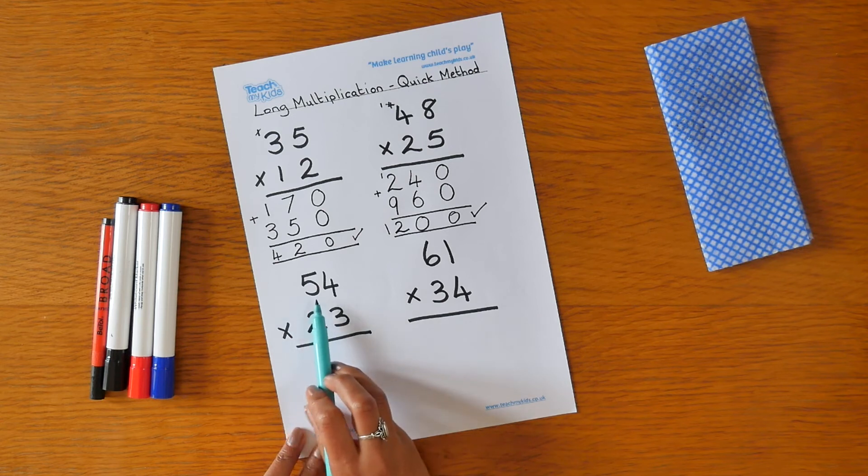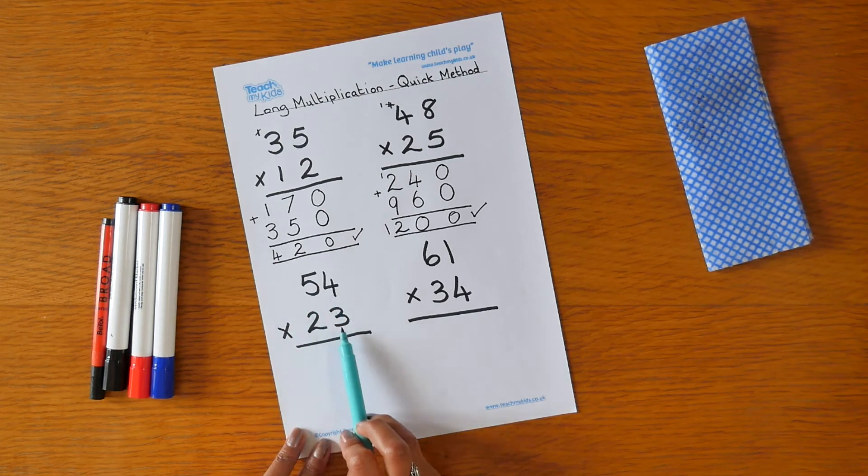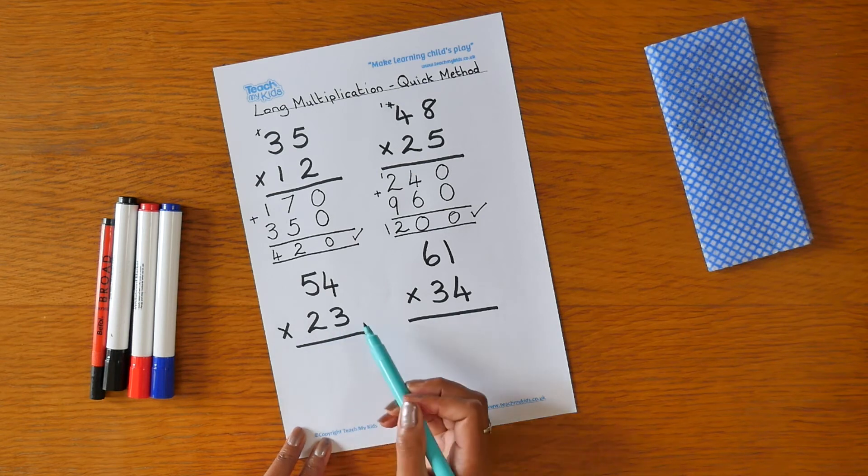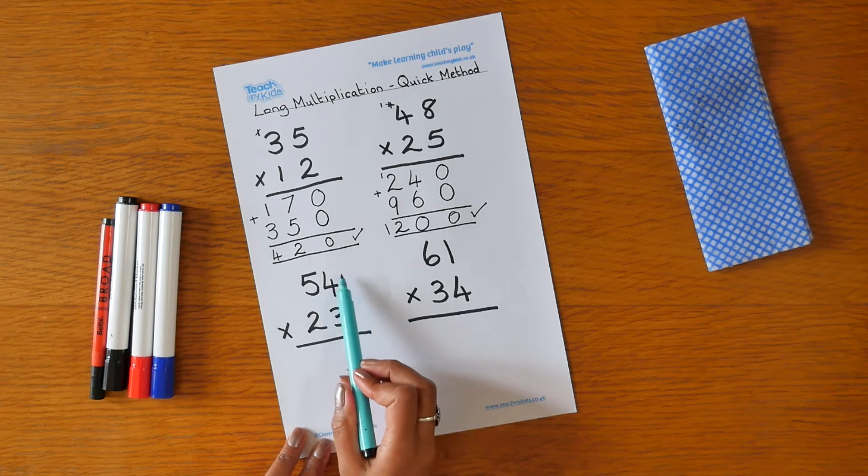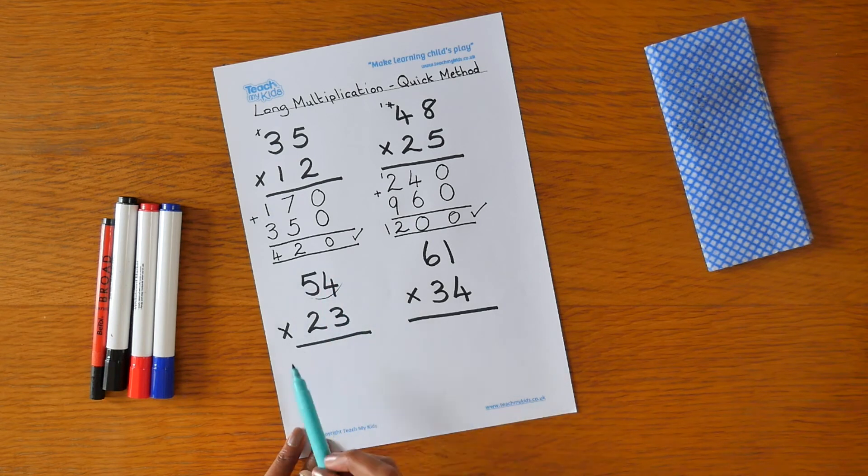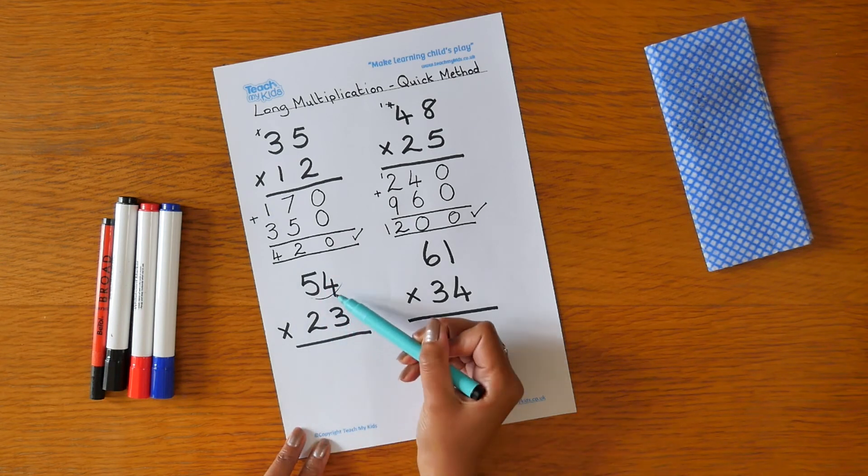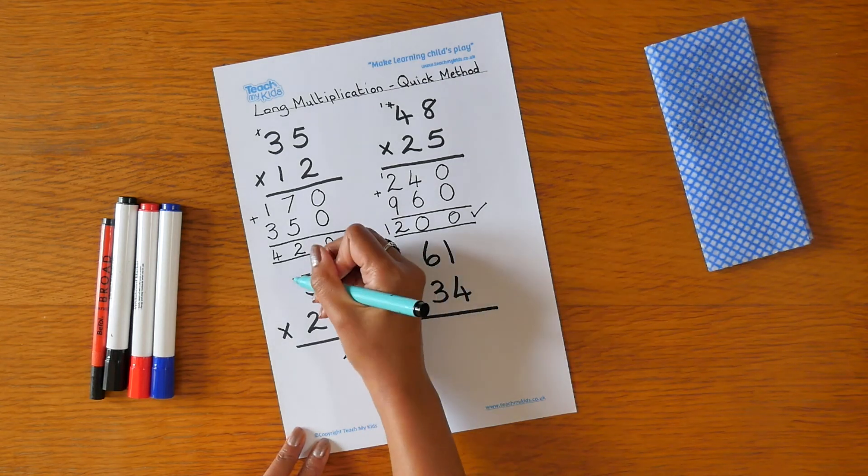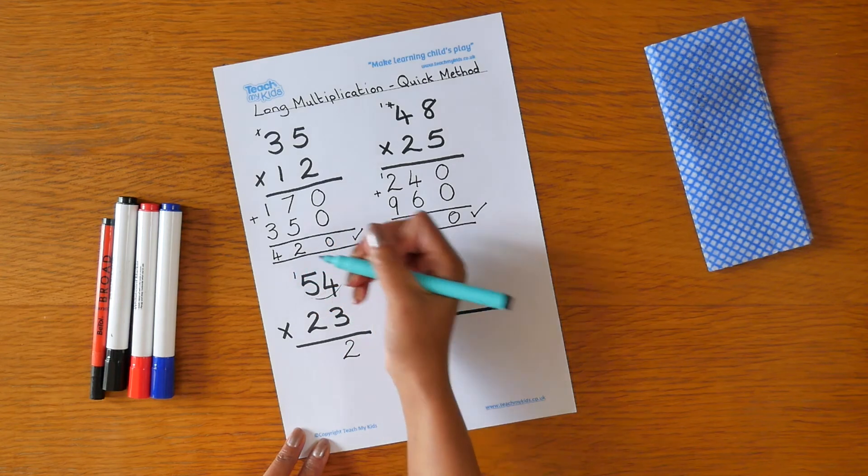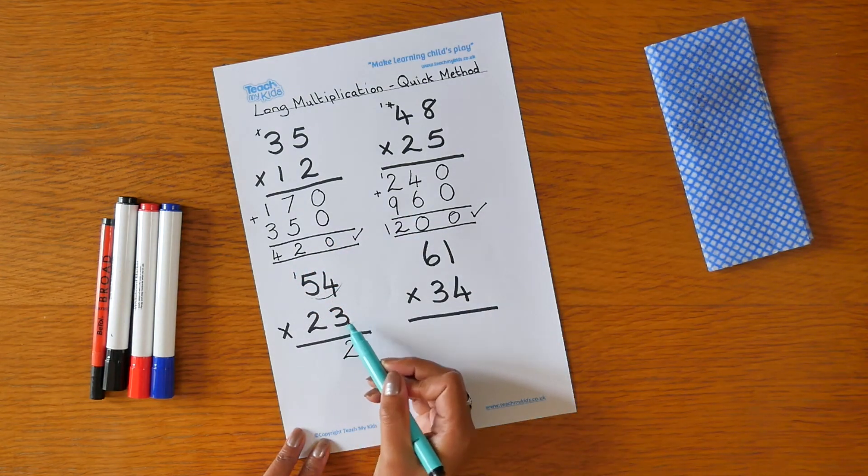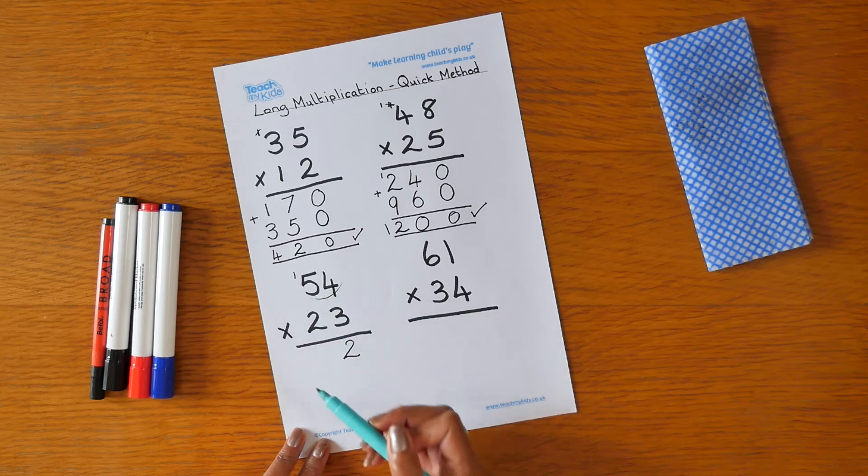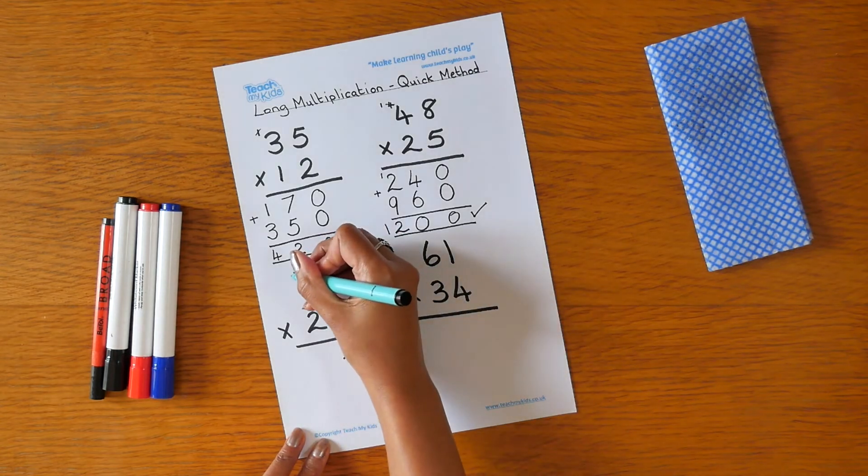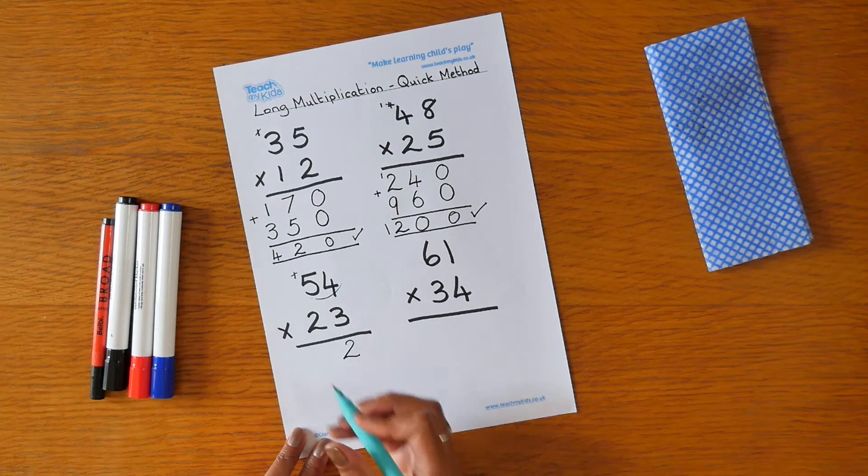Our next sum is 54 times 23. We begin by multiplying the top number by 3. So we've got 3 times 4 is 12. Carry the 1. 3 times 5 is 15 plus the 1 we carried, which is 16.